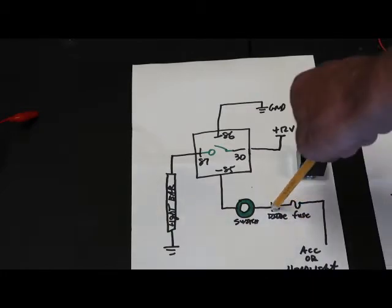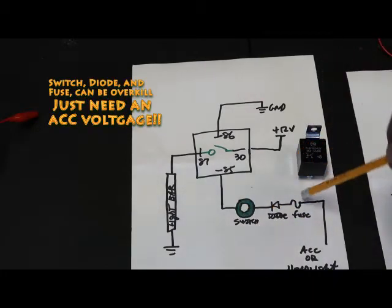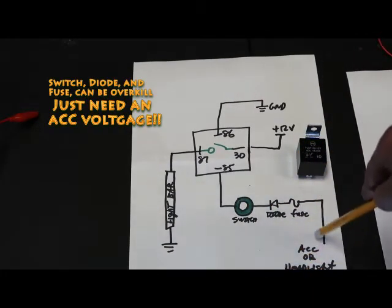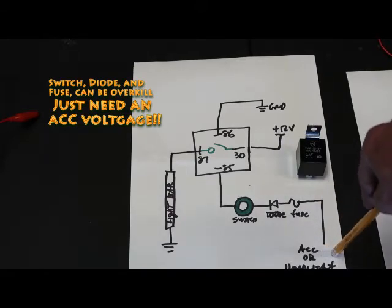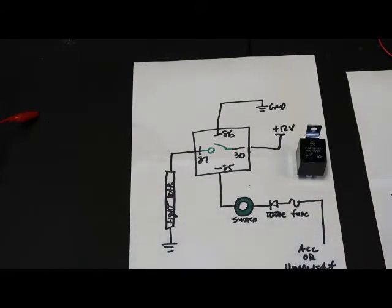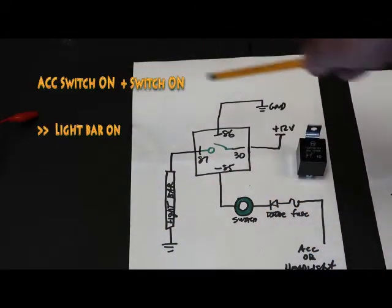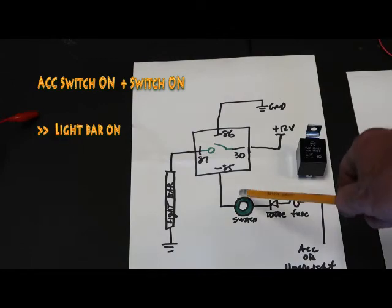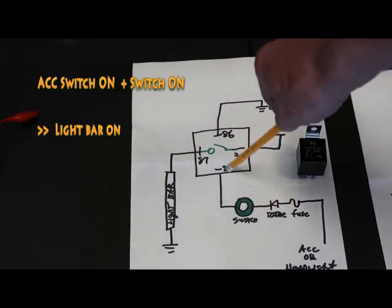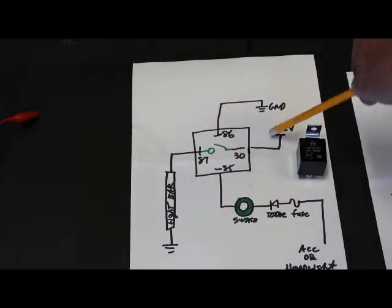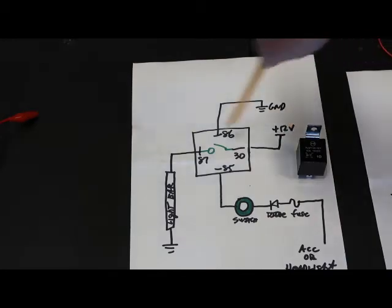We put a diode so current will only go one direction, and we put a fuse so we don't screw anything up in the car, and then we hooked it to an ACC on the car. Now, when we turn ACC on is the only time or headlight that this whole system can energize. You turn on the switch, it energizes 85, and 85 actually relays the voltage from 12 volts over to the light bar.